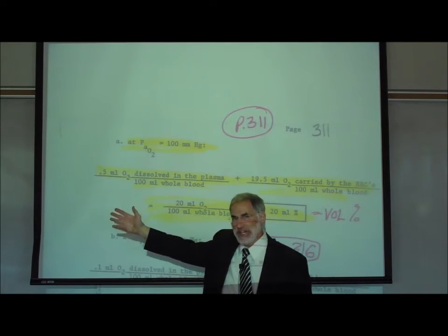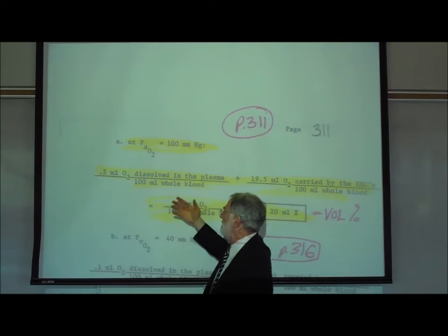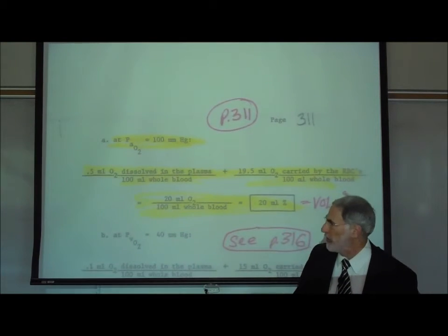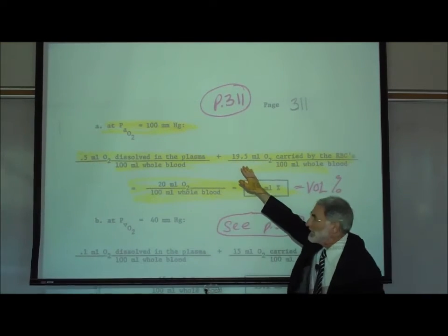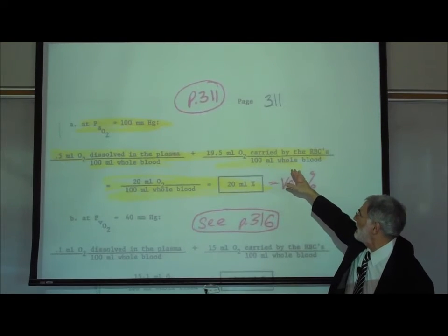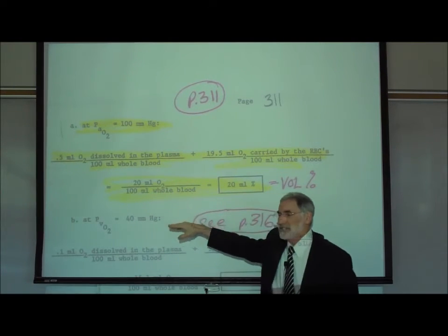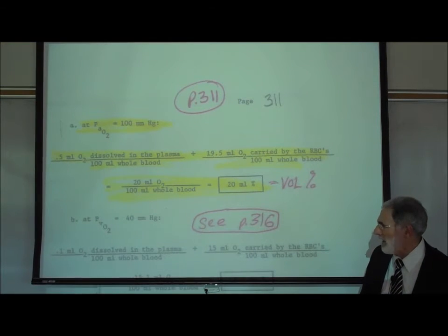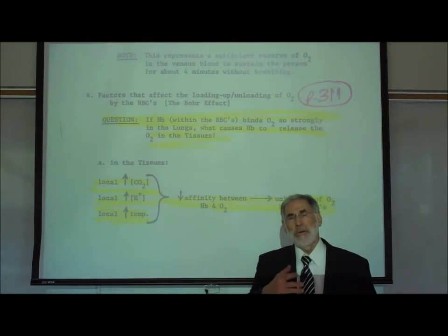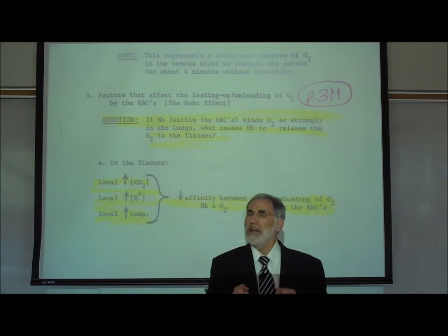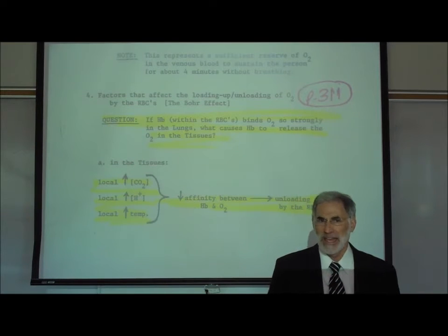On page 311, when the partial pressure of oxygen in the alveoli and systemic arterial blood is 100 millimeters of mercury, there is about a half a milliliter of oxygen dissolved in the plasma and 19.5 milliliters bound within the red blood cells attached to the hemoglobin, for a total of 20 milliliters of oxygen in every 100 milliliters of oxygenated blood.